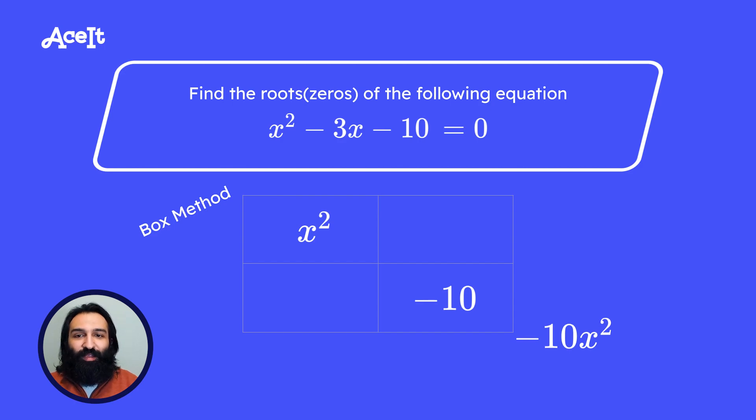We then multiply the first term in the top left box with the term in the bottom right box and we get negative 10x squared.